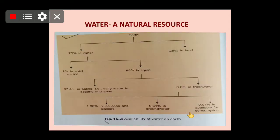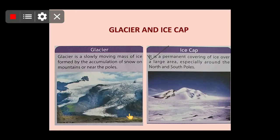As I have told you, water is found in frozen form as glaciers and ice caps. A glacier is a slowly moving mass of ice formed by accumulation of snow on mountains or near the north and south poles. Glaciers are found on mountains and ice caps are found at the north and south poles — this water is in frozen form and we cannot use it for our activities.